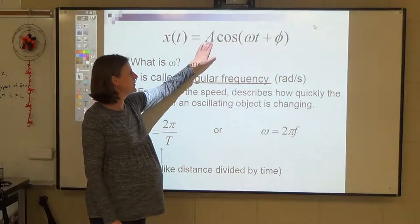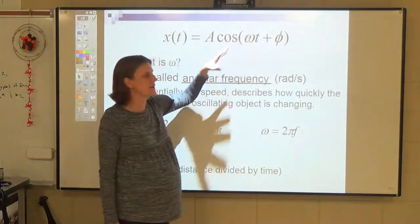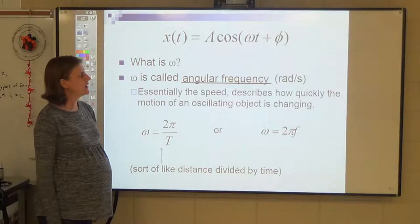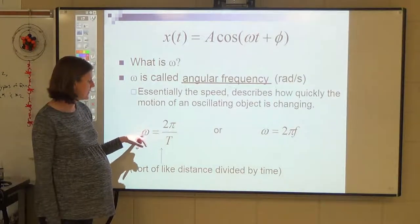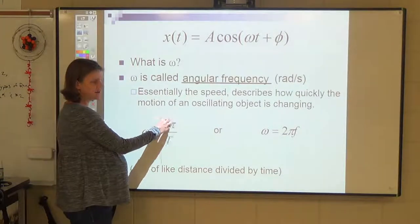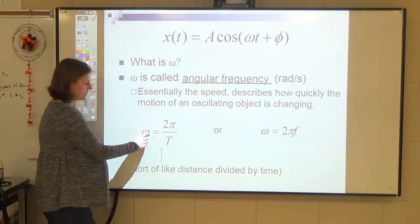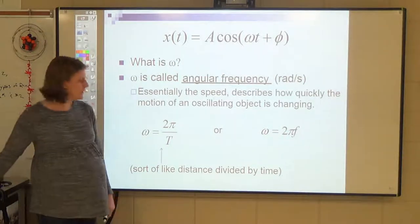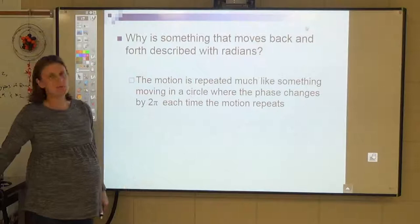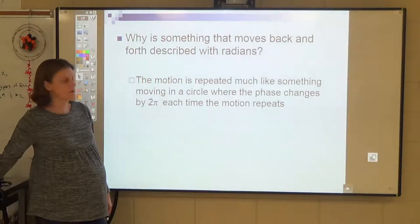So: A is the amplitude, phi is the phase constant (almost always 0), and omega is the angular frequency in radians per second — it describes how fast the object goes back and forth. The formula is omega = 2π/T, which makes sense: 2π radians is one full cycle divided by the period. We describe oscillations in radians because they repeat, and every cycle goes through a phase of 2π.